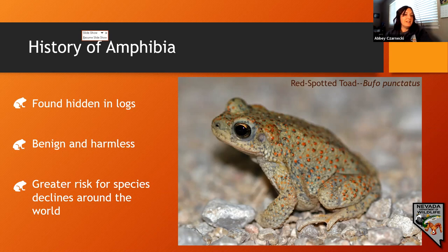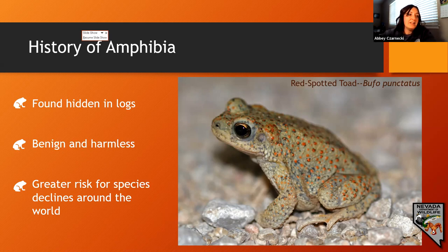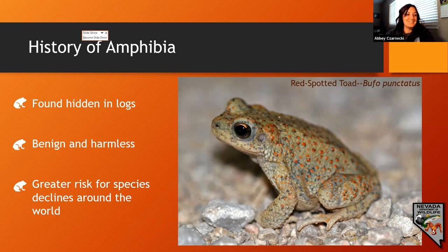A number of salamanders, such as the North American mud puppy and the Mexican axolotl, develop legs but retain their larval gills and stay in the water throughout their lifetimes. This is a classic example of the evolutionary phenomenon known as neoteny — the retention of larval or juvenile features in mature adults.